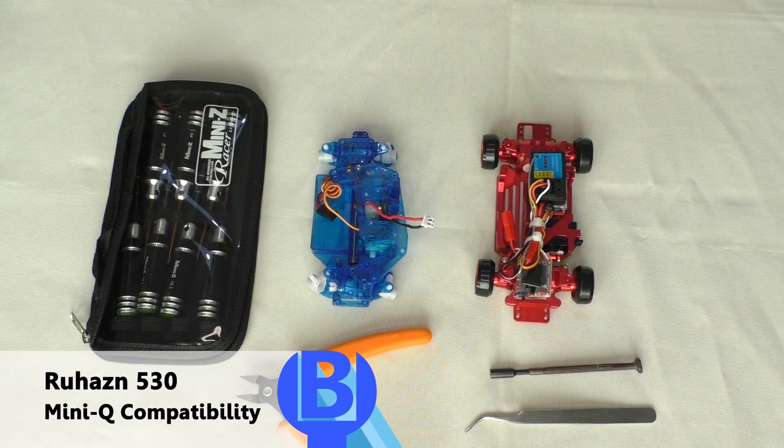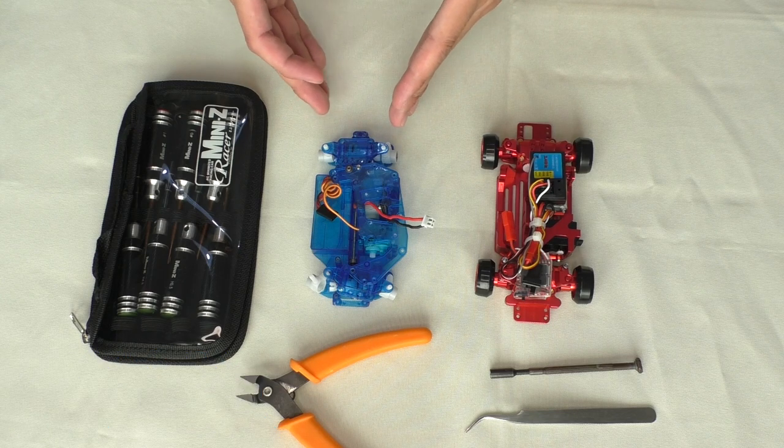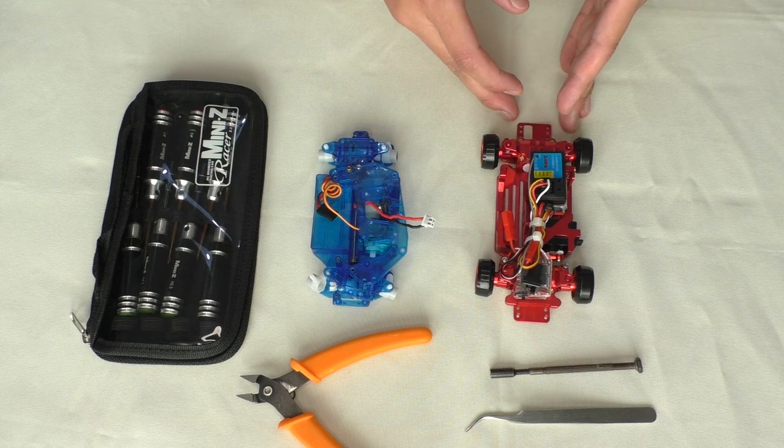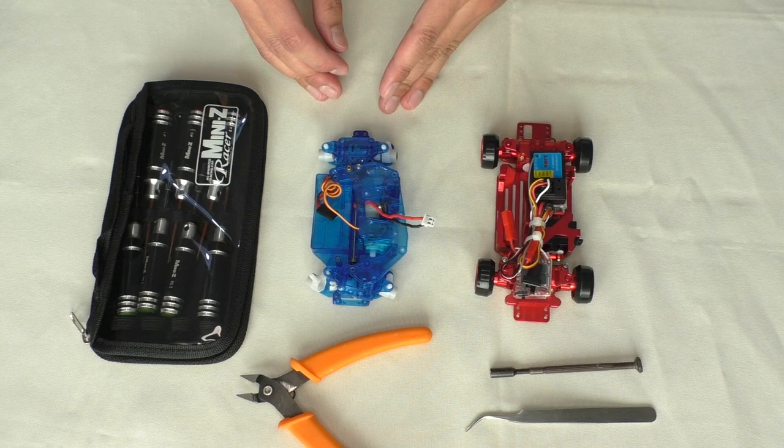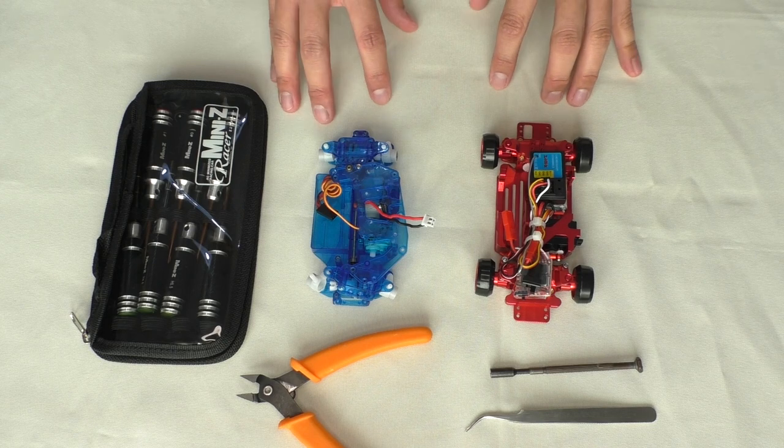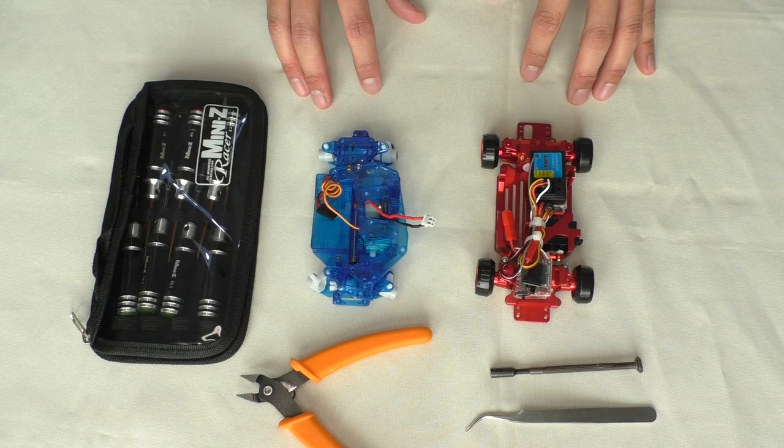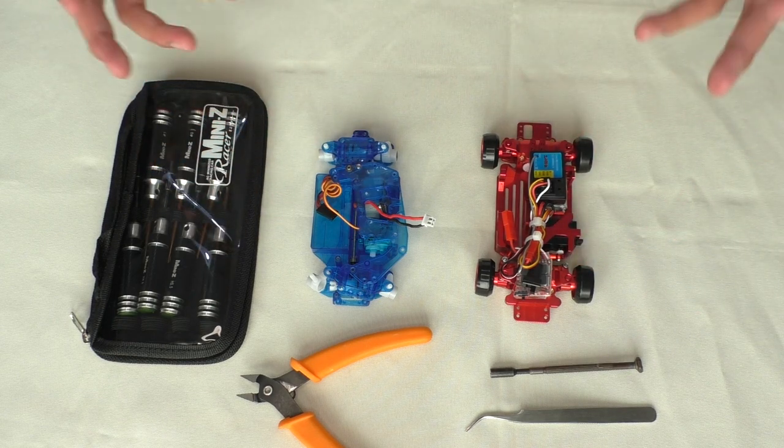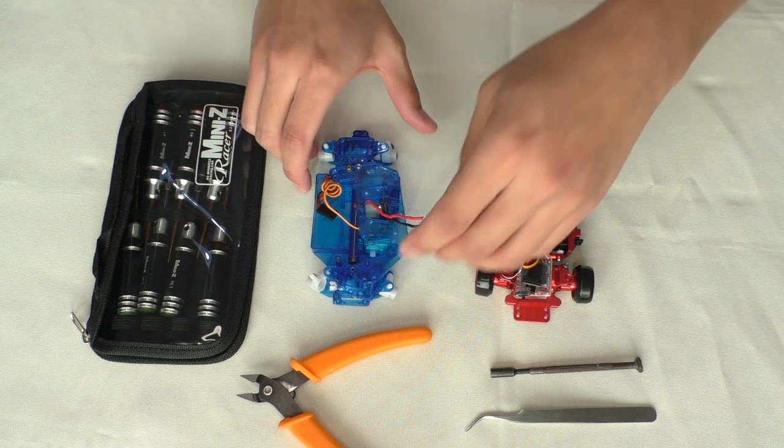Hello everyone, welcome to Beaver's Hobby Channel. In this video we're going to take a look at how much we can transfer from Mini-Q TR-Q1 to the Ruhan 530. This is a question I got from the comment section in my last video. I said that they are practically the same car, but maybe there are some differences in the position of the drive shaft or the bearing sizes.